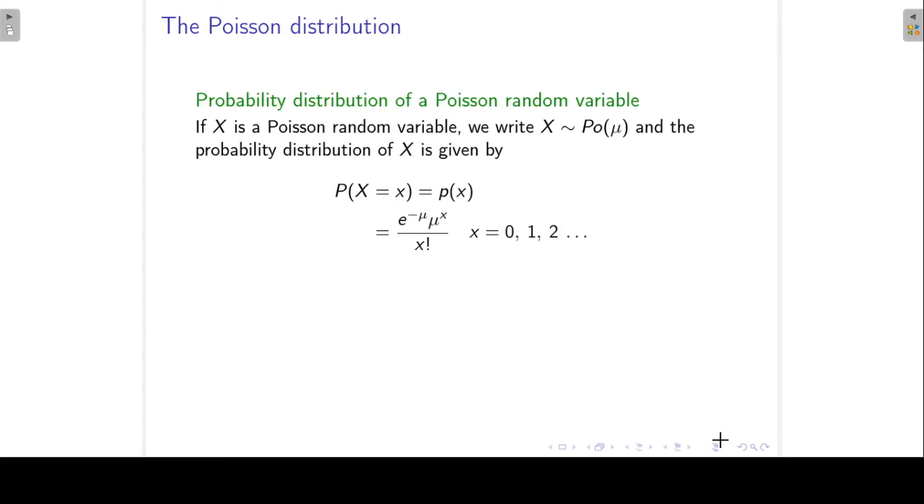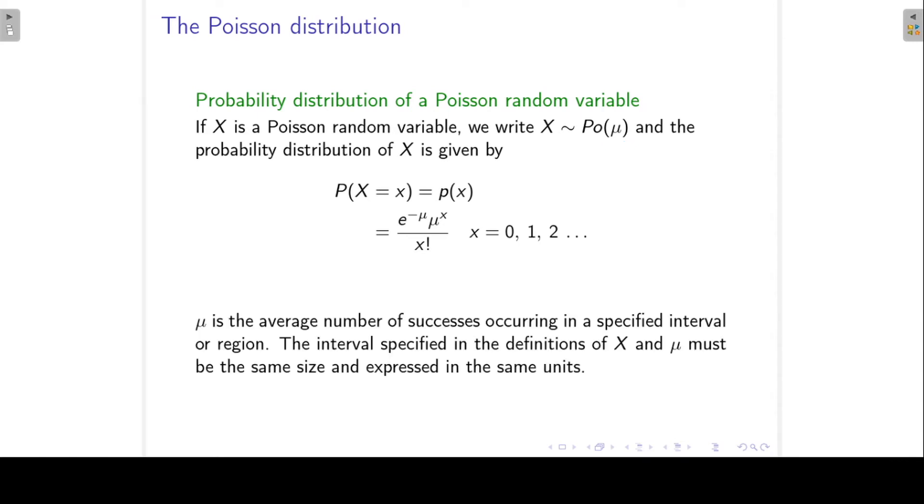We can express the probability distribution in formula form. For the Poisson distribution, we have only one parameter, mu. We can write the probability distribution as P(X = x) = e^(-mu) * mu^x / x!, where x can take on the value 0, 1, 2, but there's no upper limit, so it can go on and on. What is the meaning of this parameter mu? Mu is the average number of successes occurring in a specified interval or region. The interval specified in the definitions of x and mu must be the same size and expressed in the same units.